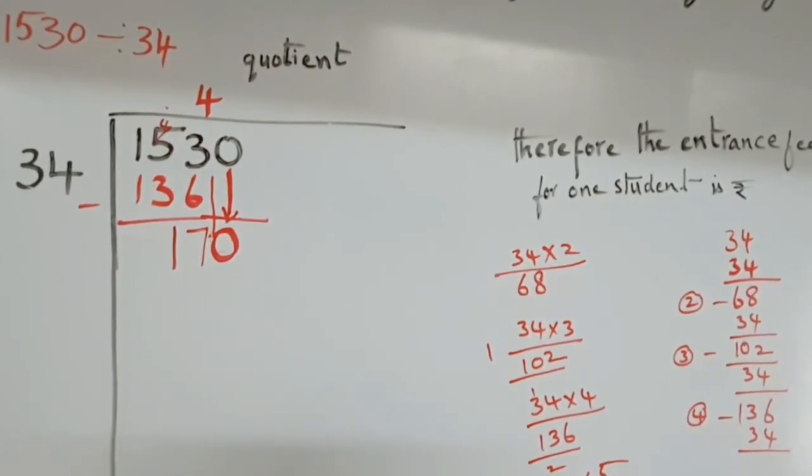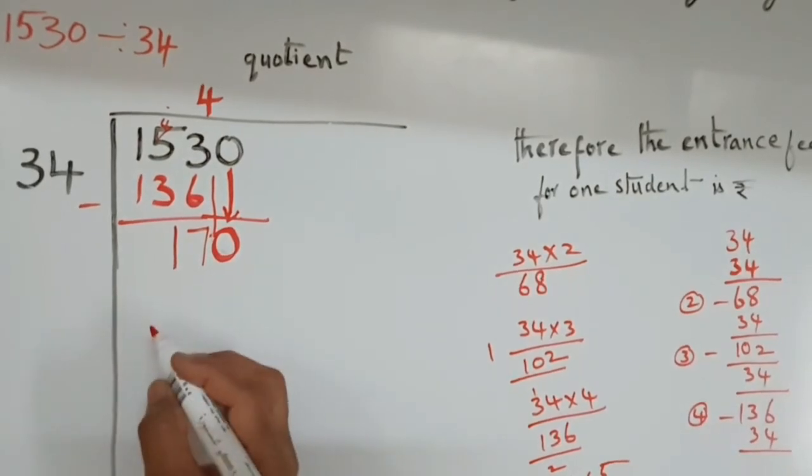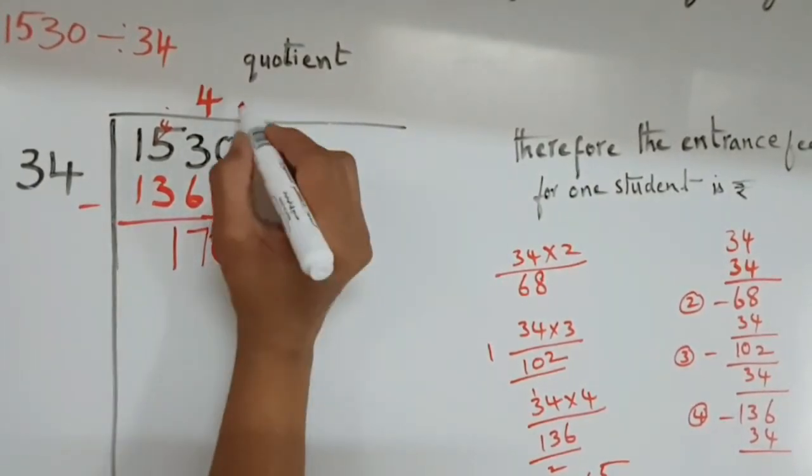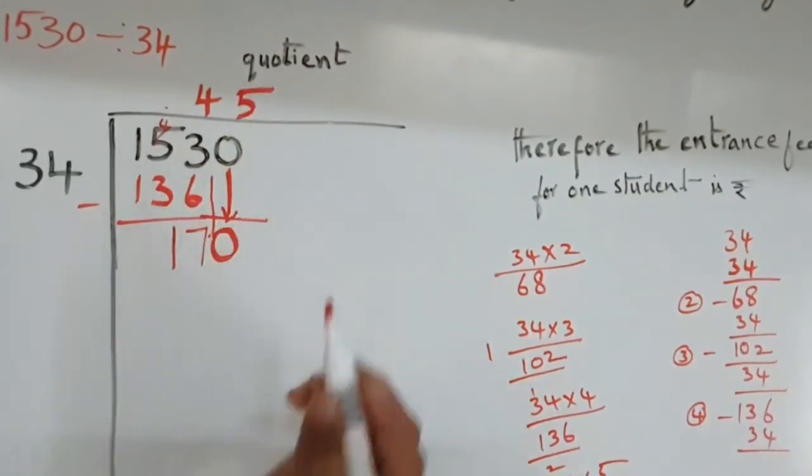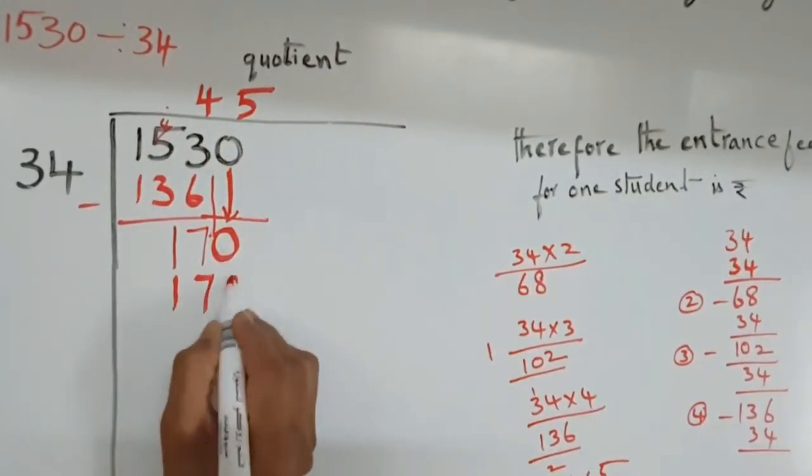We already know. 34s are 34. 5s are 170. 5 times 34 are 170. You can write. 5 times 34 are 170.